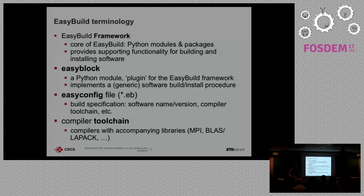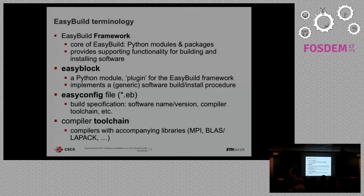EasyBlocks are specific to a software or mostly generic. For example, you have an EasyBlock for applications that use ConfigureMake. Depending on the application, you might need a specific one, but mostly you use only the EasyConfig file, which is a recipe that is not generic — it contains the version. That's one of the key ideas of EasyBuild: you have the versions of the software specified in the recipe, so if someone else takes it and tries to rebuild, they will use the exact same versions. Other software package managers are more flexible but offer no guarantee you'll use the same versions and achieve reproducibility.